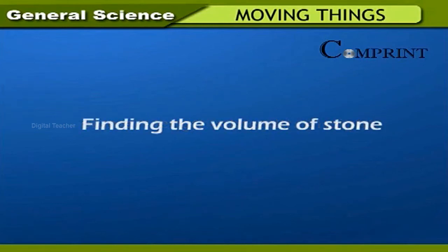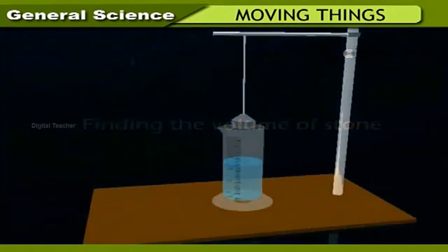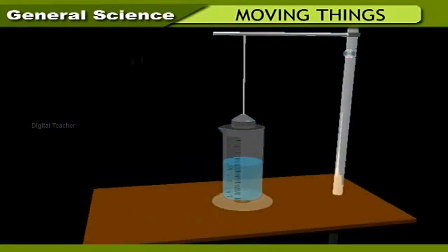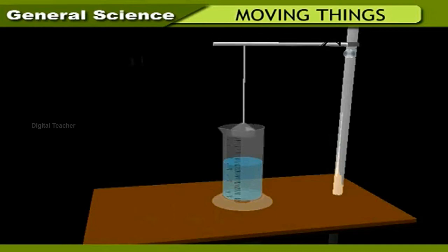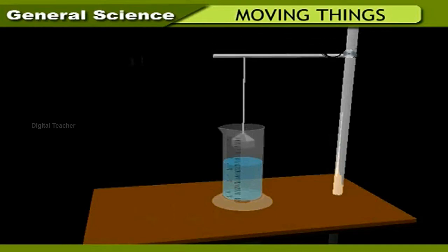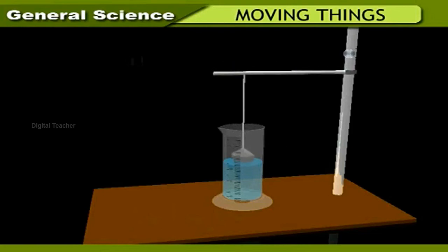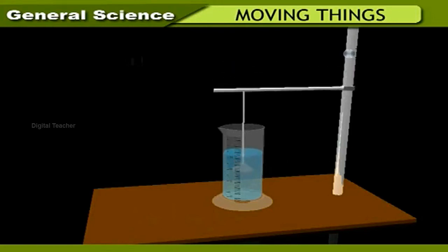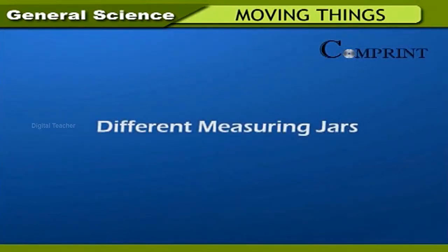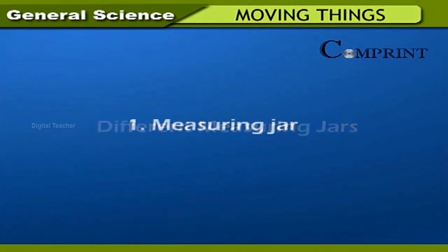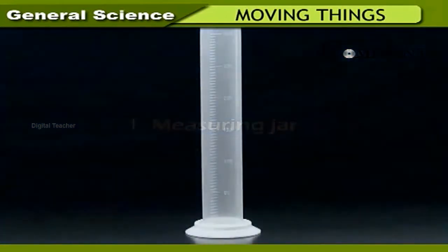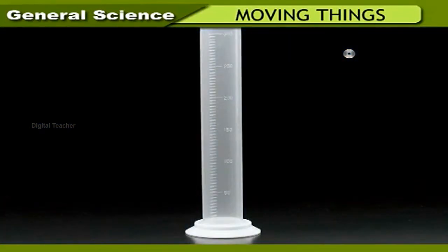Activity — finding the volume of a stone: take a measuring jar and fill half of it with water, then note the reading. Hang the stone to a stand with a thread and arrange the measuring jar so that the stone is dipped in the water. The water level rises, and the difference between the two levels is the volume of the stone.